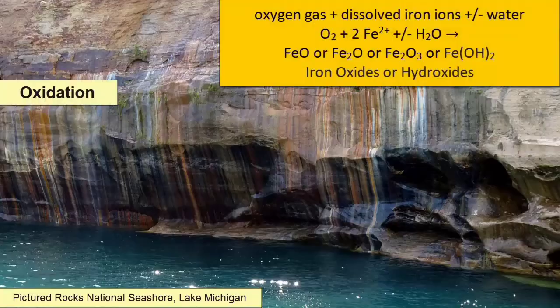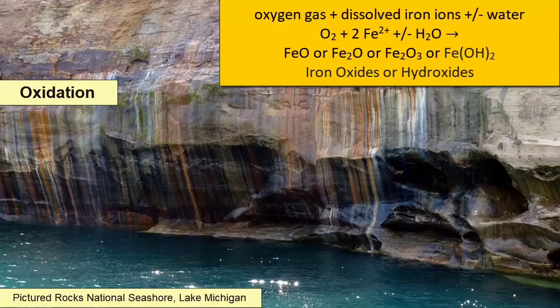Oxidation happens when oxygen in the atmosphere gets together with dissolving ions and creates a new oxide mineral, such as iron oxide or rust. This new oxide will coat the surface of the rock where the dissolution was taking place. We see evidence of oxidation when we see stained surfaces on rocks. These stains come in a multitude of colors depending on which ion oxidized. Iron oxides can be yellow, orange, red, or brown depending mostly on how much oxygen is available.